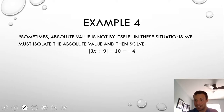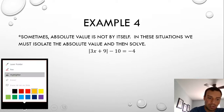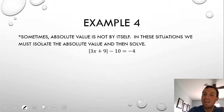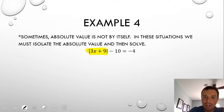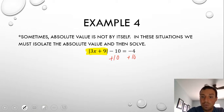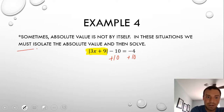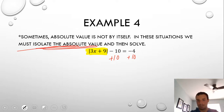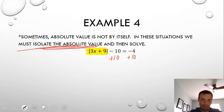Sometimes absolute value is not isolated to begin with. You must isolate the absolute value before writing your two cases. For example, if you have 3x plus 9 with a minus 10, you must add 10 to both sides first. A big mistake people make is saying 'absolute value can't be negative, so no solution' — but you haven't isolated it yet. Once isolated, negative 4 plus 10 equals positive 6, so it's fine.